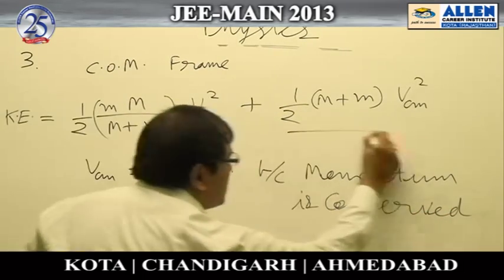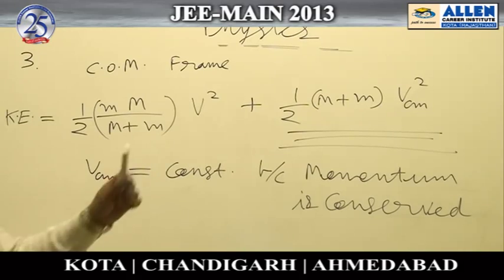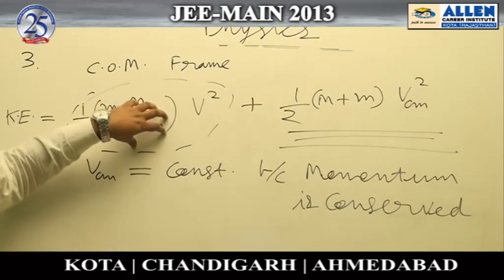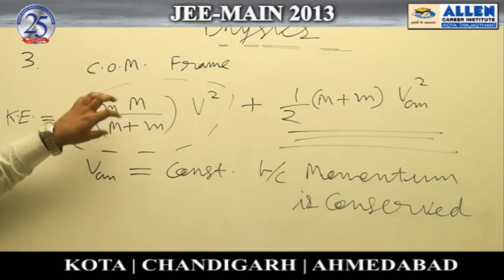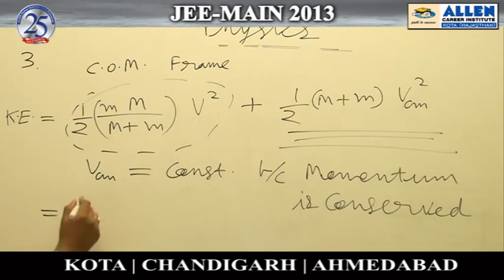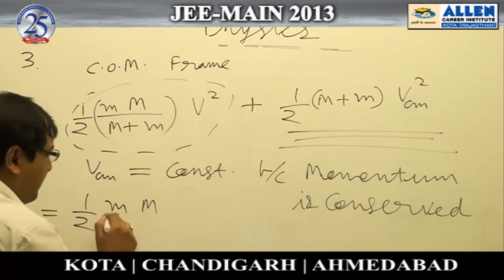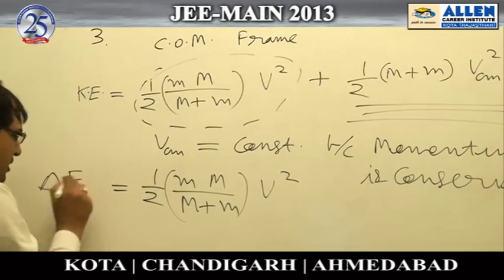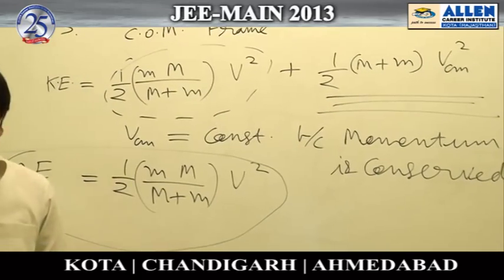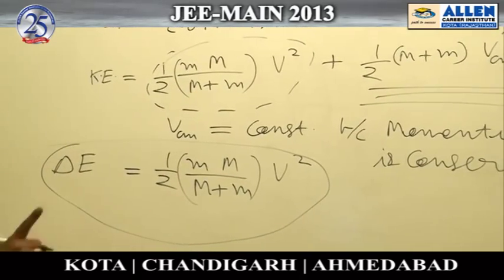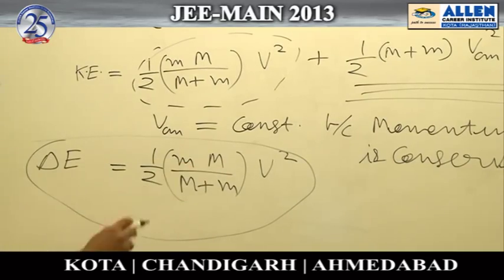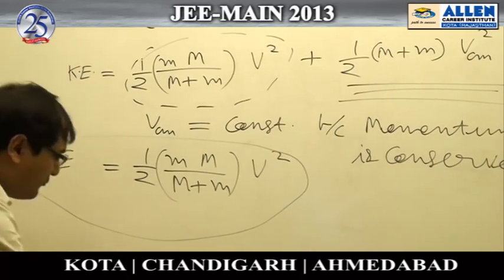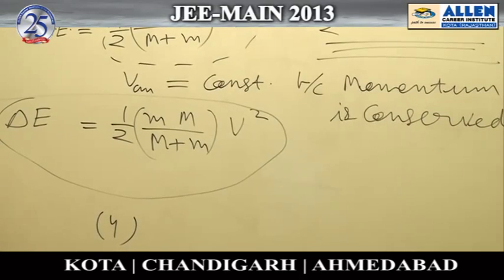The center of mass energy part remains the same, but the kinetic energy in the center of mass frame — (1/2)(mM/(m+M))v² — is the energy available that can be completely given away during the collision. Since the given option states a different value for energy lost, option number 4 is the correct option because statement 1 is false.